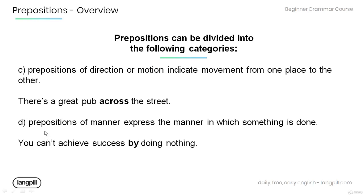D: Prepositions of manner express the manner in which something is done. As in the example below: you can't achieve success by doing nothing. The preposition 'by' expresses the manner in which success is achieved — and it's not by doing nothing.